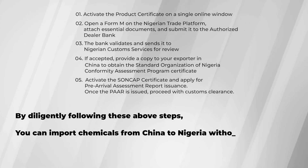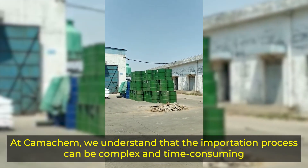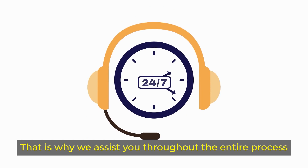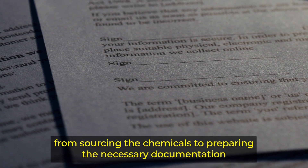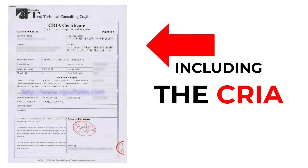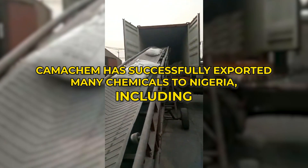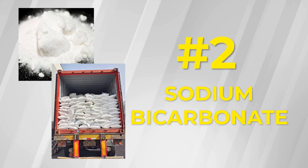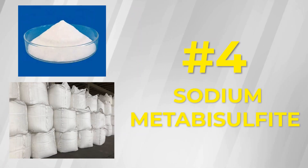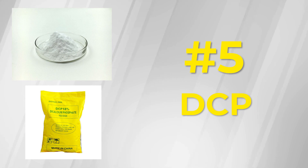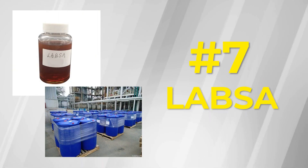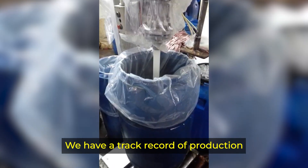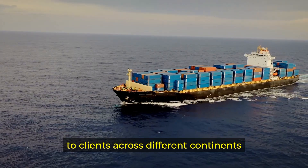By diligently following these steps, you can import chemicals from China to Nigeria without any issues. At ChamaChem, we understand the importation process can be complex and time-consuming. We assist you throughout the entire process, from sourcing the chemicals to preparing the necessary documentation, including the CRIA. ChamaChem has successfully exported many chemicals to Nigeria, including caustic soda flakes, sodium bicarbonate, calcium carbide, sodium metabisulfite, DCP, MCP, LABSA, SLES, and many others. We have a track record of producing, packing, and shipping chemicals in large quantities to clients across different continents.